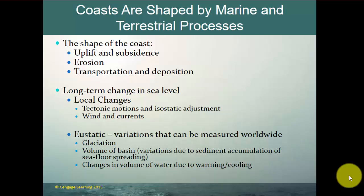The shape of the coast is a function of the processes of uplift and subsidence, erosion, transportation, and deposition. Long-term changes in sea level can come from tectonic motions and isostatic adjustment, and there are also coastal changes from winds and currents. Eustatic variations measured worldwide reflect glaciation — how much ice is locked up on ice sheets. The volume of a basin can vary due to sediment accumulation and seafloor spreading, and water volume can change due to thermal expansion, where a warmer sea surface is thicker and a colder one thinner.